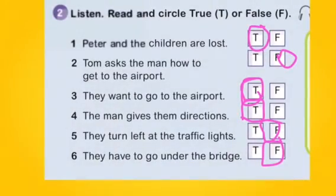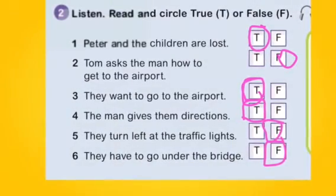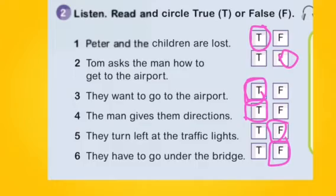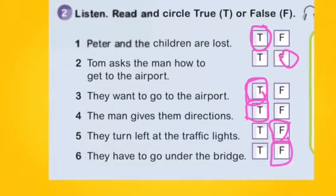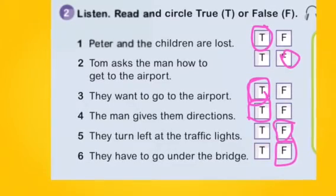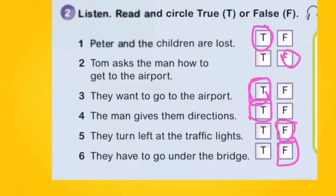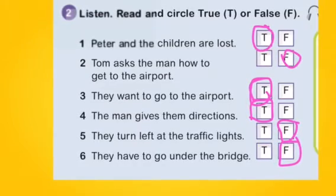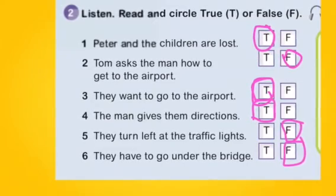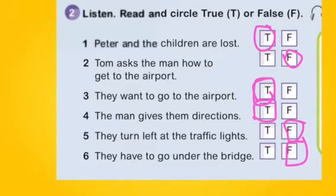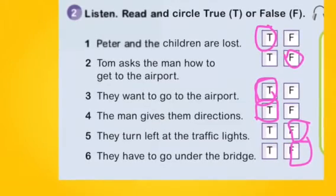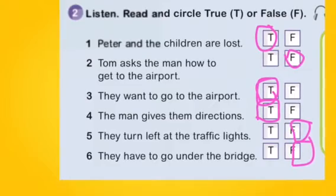Number one: Peter and the children are lost — True. Number two: Tom asks the man how to get to the airport — False. Number three: They want to go to the airport — True. Number four: The man gives them directions — True. Number five: They turn left at the traffic lights — False.